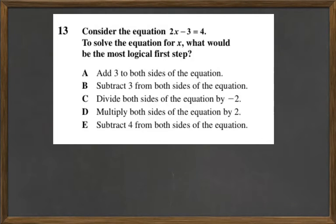Consider the equation 2x minus 3 equals 4. To solve the equation for x, what would be the most logical first step?